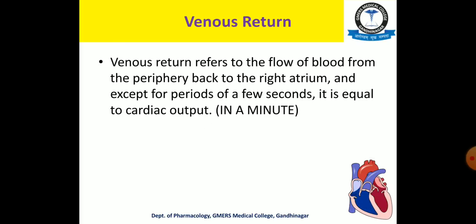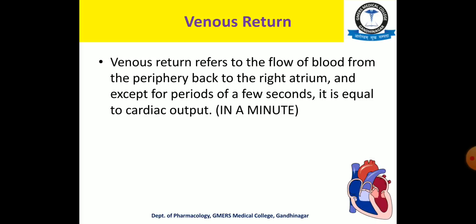Next is venous return. It is the return of venous blood from the periphery into the right atrium. The name itself suggests the return of venous blood from the peripheral circulation into the right atrium. And except for a few seconds, we can say that in normal physiological conditions, venous return is equal to cardiac output.